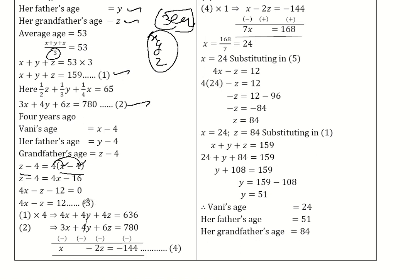To eliminate y, we take equation 1 multiplied by 4: 4x plus 4y plus 4z equals 636. Subtracting equation 2 (3x plus 4y plus 6z equals 780) from this, the 4y and 4y cancel. We get x minus 2z equals 636 minus 780, which is minus 144. This becomes equation 4.